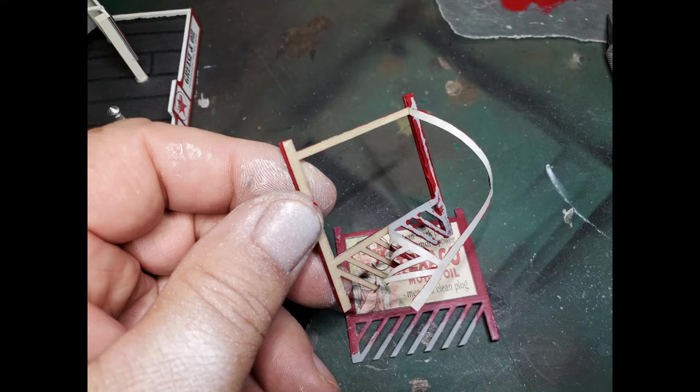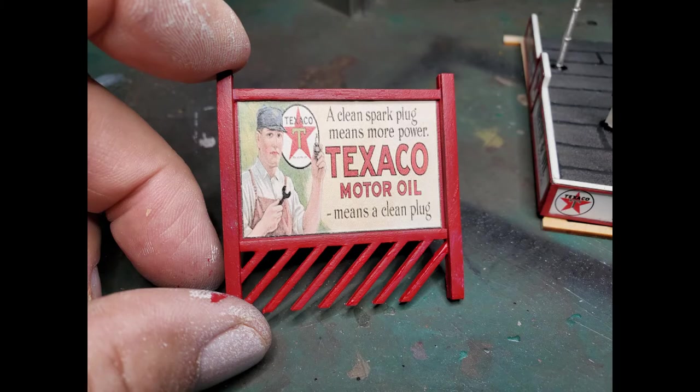The trim for the sign has an adhesive backing. And you just peel the backing off and carefully align it and press it in place.